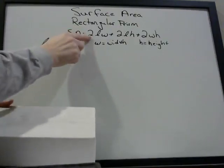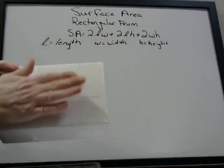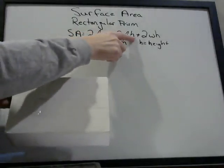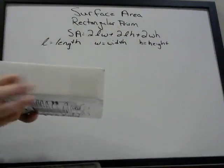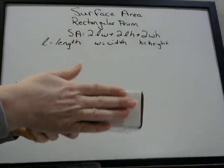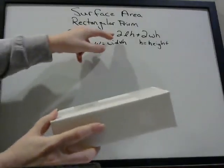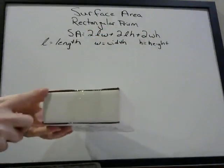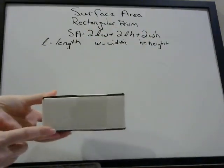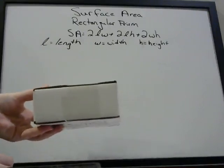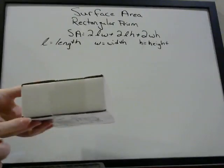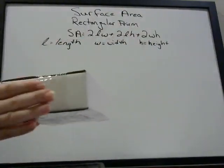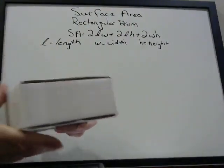So this first part of the formula is length times width — we're finding the area of the top, which is also the same as the area of the bottom, so we multiply it by two. This part of the equation says length times height, so we're finding the area of the front and the back, which are the same, so we multiply by two. Width times height — we called this width and this height — so the area of this rectangle is width times height. This side and this side are the same, that's why we have two of them.